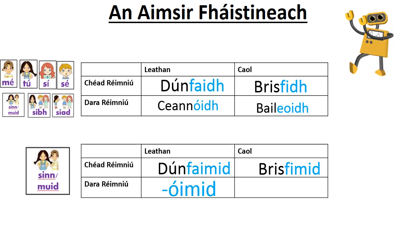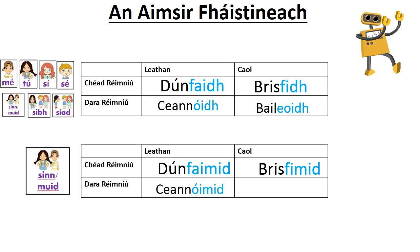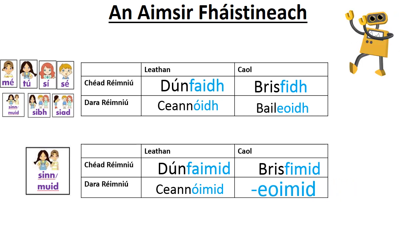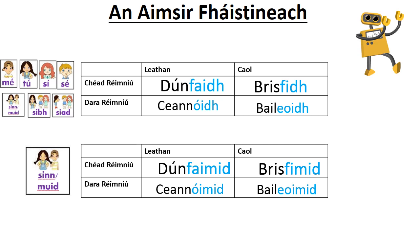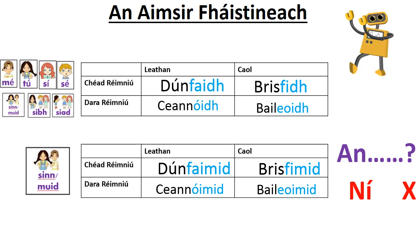You can see how that relates to the '-oidh' ending above — it's the '-oidh' ending but with '-mid' on the end. So: ceannaímid, and you can probably guess what's coming next. Just like our aimsir láithreach, our question is 'an' and our negative answer is 'ní'. It's only in the aimsir chaite that it's different, where it's 'ar' and 'níor'.